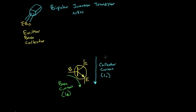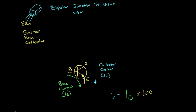In the last video we saw how a transistor is going to allow a collector current, I sub C, to flow that is equal to the base current, I sub B, times some large number, like 100. So it's going to allow this large collector current to flow that is 100 times whatever the base current is flowing.